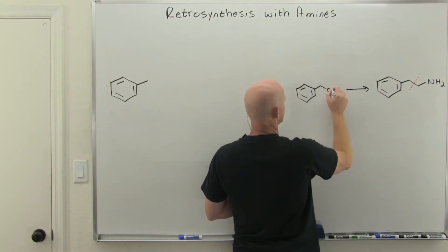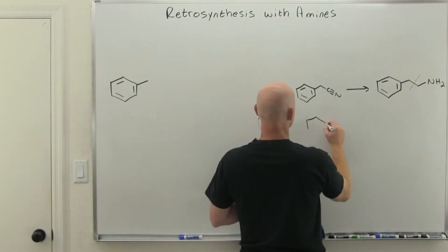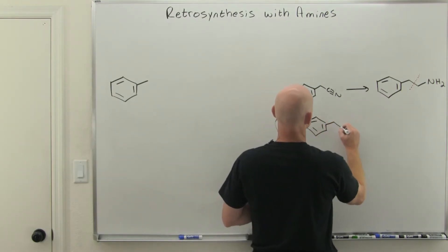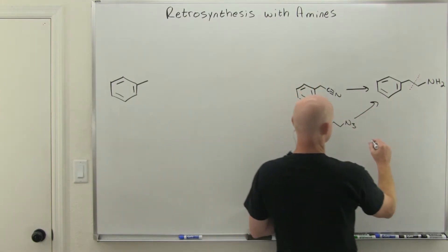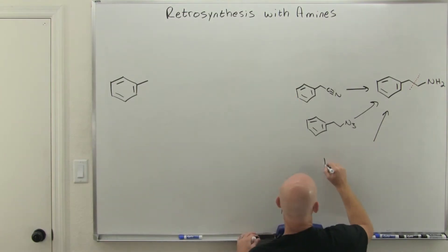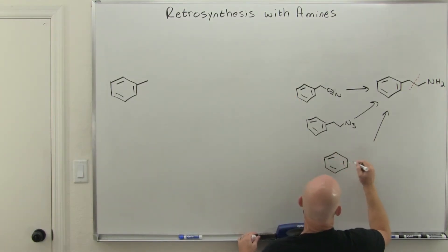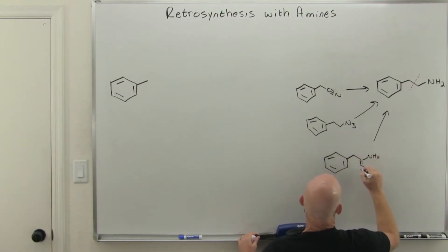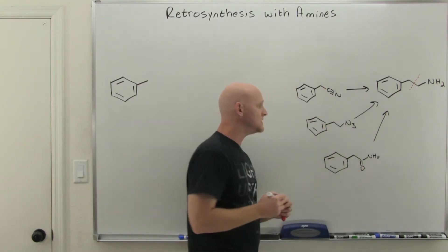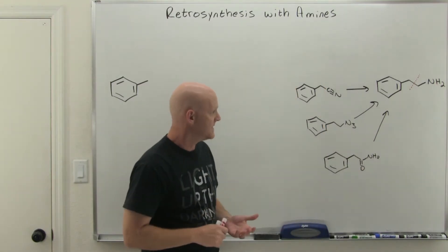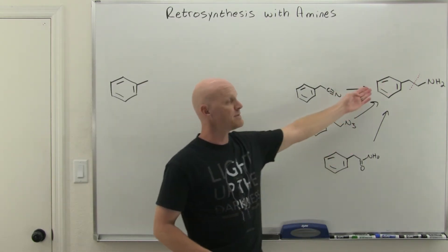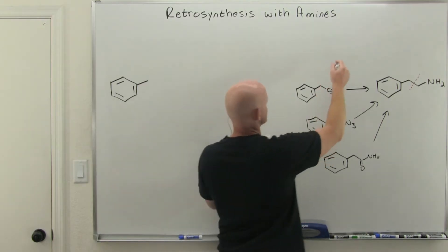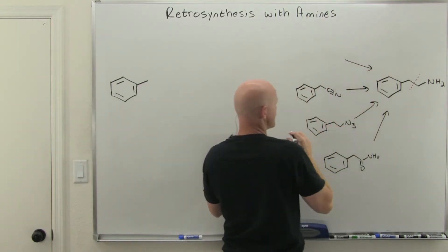We could get this by also reducing the corresponding azide, and we could get this by reducing the corresponding amide. All of these would be accomplished with lithium aluminum hydride. So there are lots of ways to make this amine.